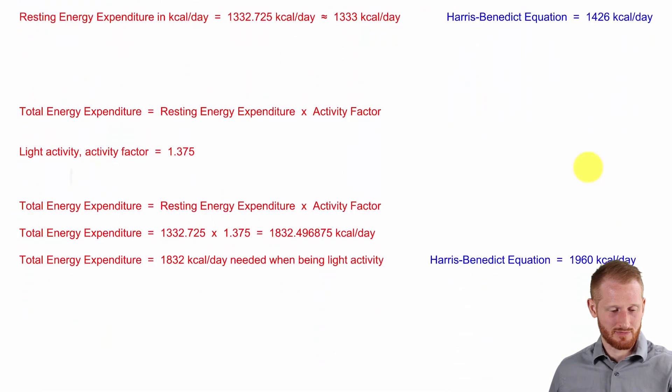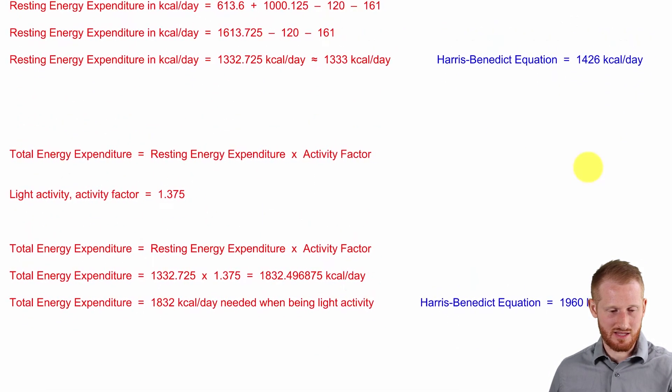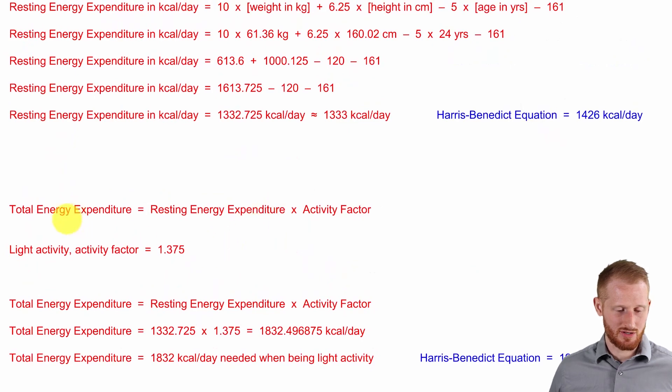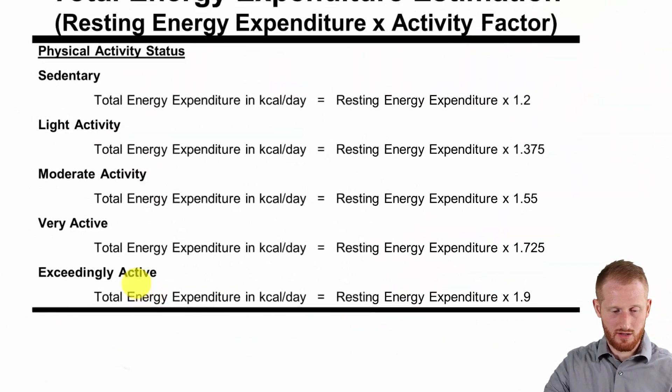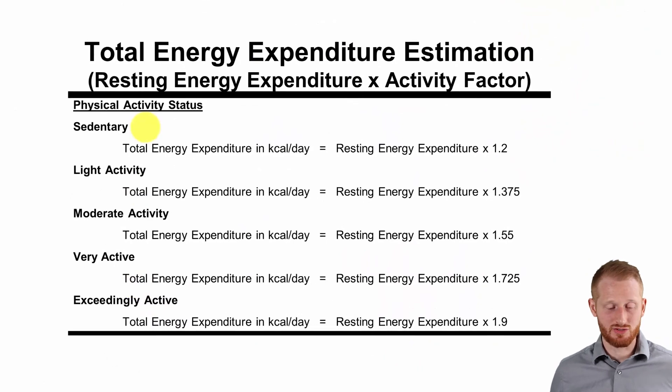Alright. So on to calculating the total energy expenditure using the resting energy expenditure here, and then the activity factor. Remember, she reported being lightly active, which going to our energy expenditure activity factor table here, again, we have sedentary, light, moderate, very, and exceedingly active.